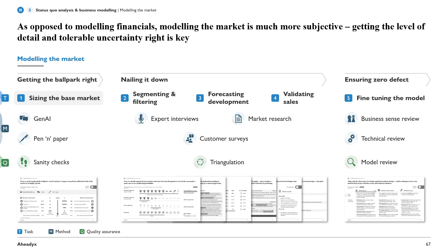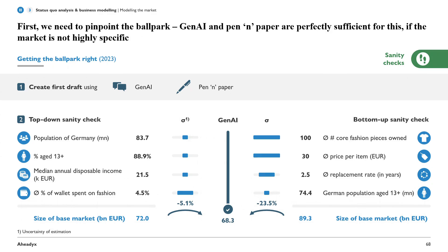Let's start with the first task — we need to get the ballpark right. We will create a first draft using a Gen AI chatbot, which is really useful for markets that are well-established and well-known, where information exists on the internet. There are also highly specific markets, especially in B2B, where you won't find much information online and chatbots won't know much about. In that case, you'll need to turn more to other methods, especially expert interviews, which we'll cover on the triangulation slide.